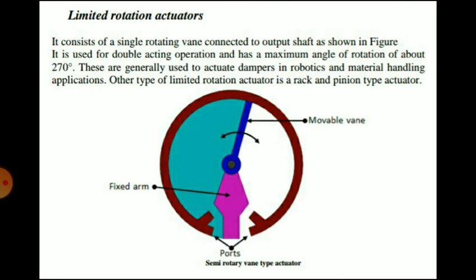Limited rotation actuators consist of a single rotating vane connected to an output shaft, with a movable vane, a fixed arm, and two ports. They are used for double-acting operation and have a maximum angle of rotation of about 270 degrees. They are generally used to actuate dampers in robotics and material handling applications. Another type of limited rotation actuator is the rack and pinion type actuator.